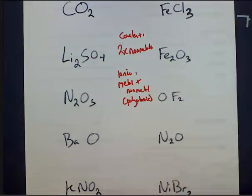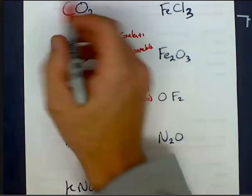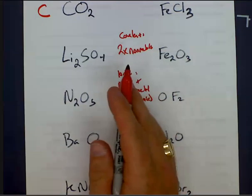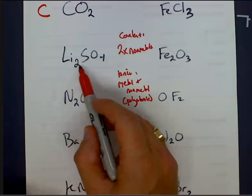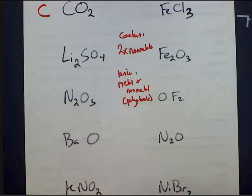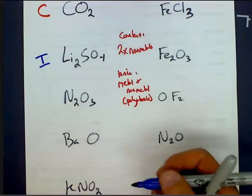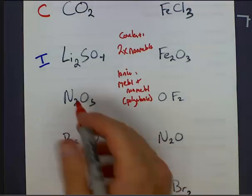We're going to mark off all of our covalent compounds. We'll use red for covalent. Here's a carbon and two oxygens, that is a covalent compound. Li2SO4, well, lithium is a metal and sulfate is a polyatomic ion, so we're going to call that an ionic compound. N2O5, two nonmetals, that's covalent.